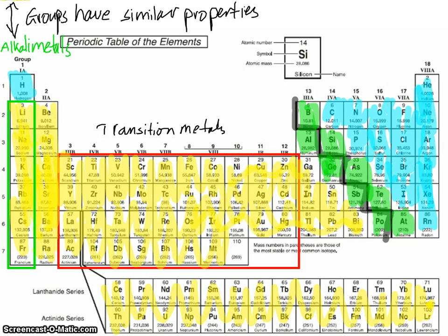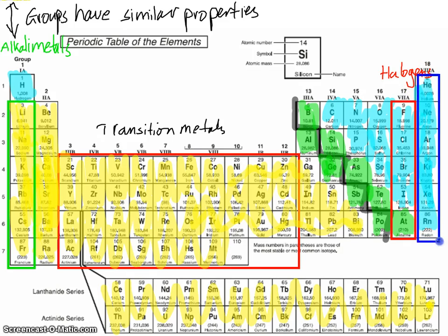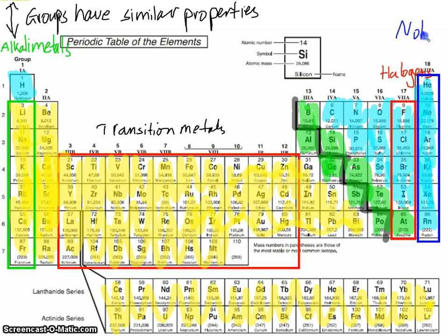This group over here is called the halogens. They're all very reactive as well, and they're actually all poisonous. You need to know the name of those. And this group here is called the noble gases — they're a very important group. We'll talk about them some more. Along with the transition metals, those are the most important group names you need to know.